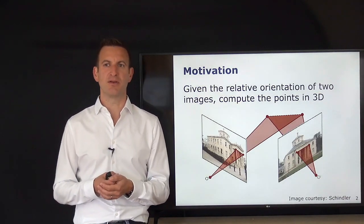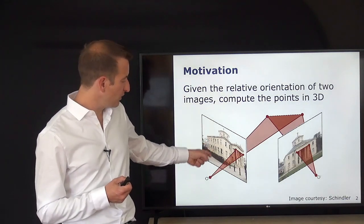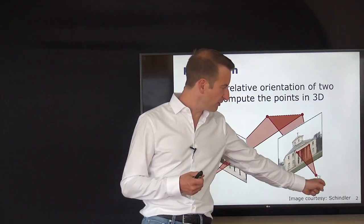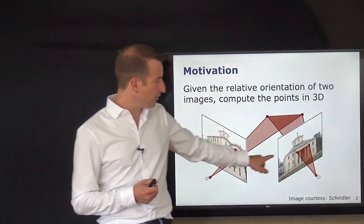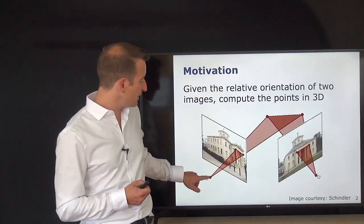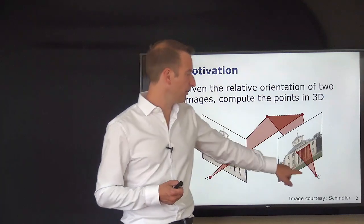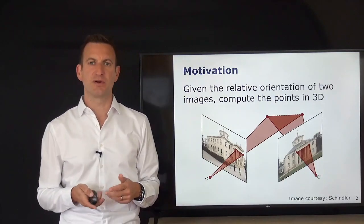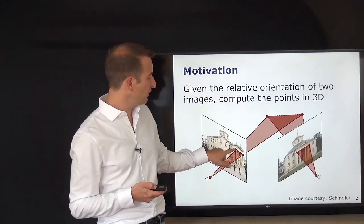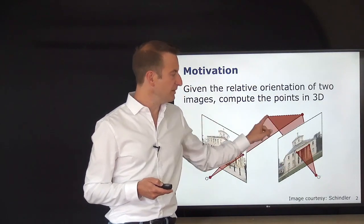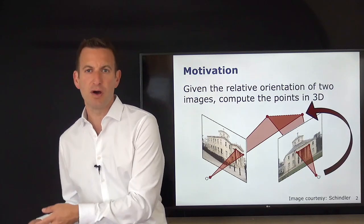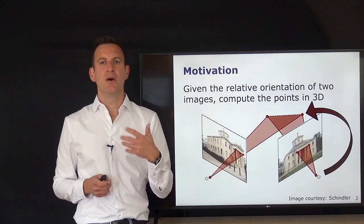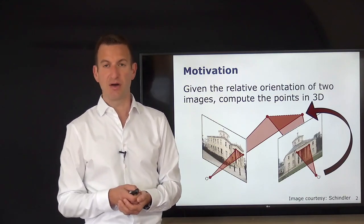We start with triangulation: given the relative orientation of two images, compute the locations of the 3D points in the world. You have two camera images, one recorded from here, the second from over there. By knowing the corresponding points in two images, you can generate a ray in the world from both projection centers, and where those rays intersect in the real world must be the 3D location of that point.